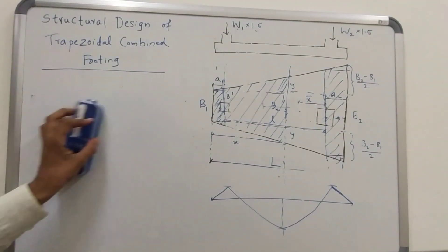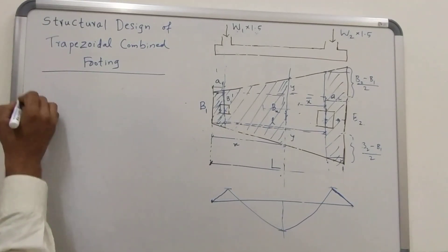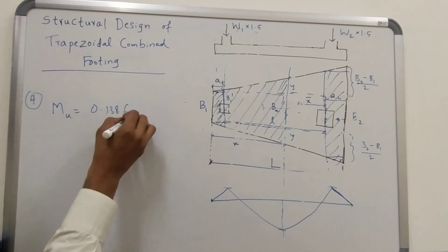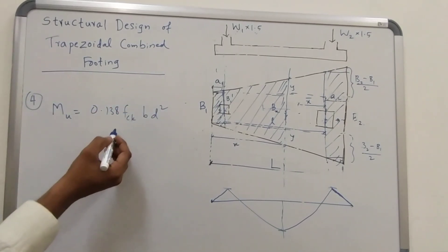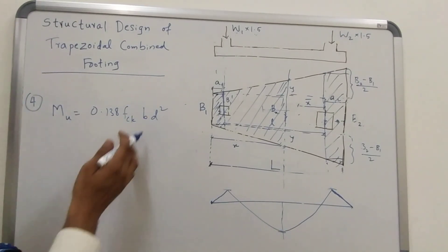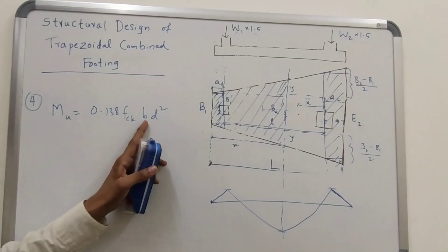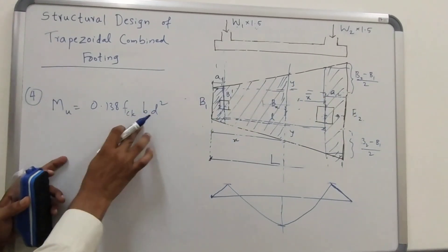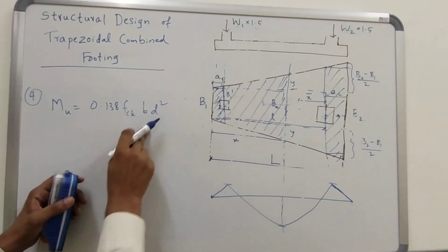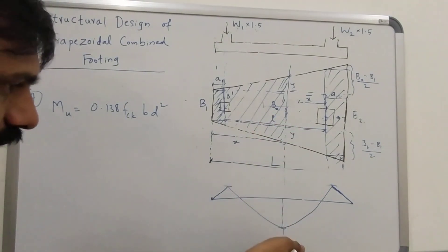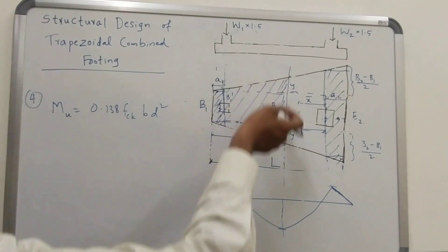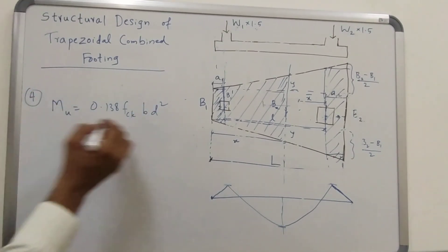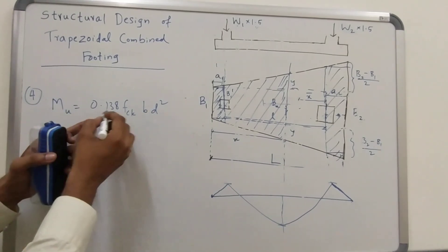Your next step is to estimate the depth of the footing. The depth of the footing uses the formula: MU is equal to 0.138 FCK BD squared. Whatever grade of concrete you are using — say M25 — FCK will be 25 going into BD squared. B is already known, so D will be equal to the square root of MU divided by 0.138 FCK B.